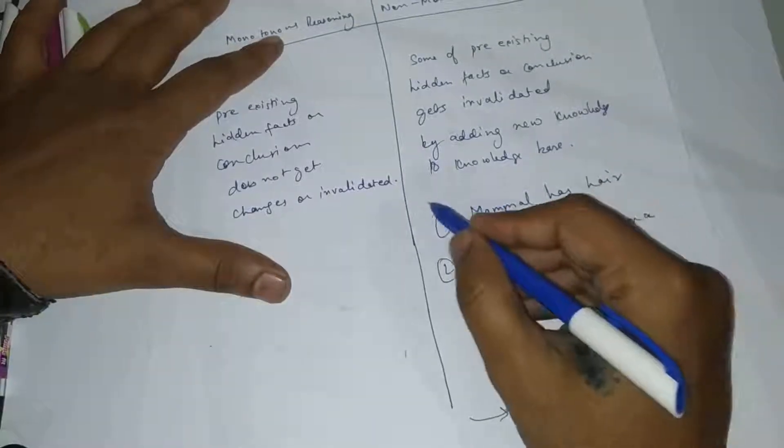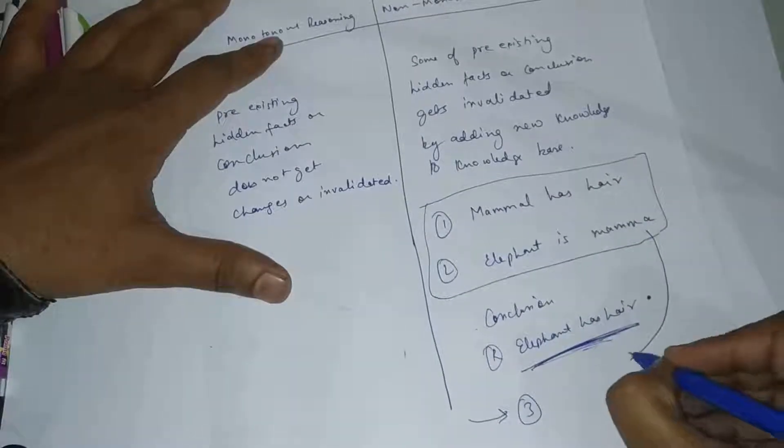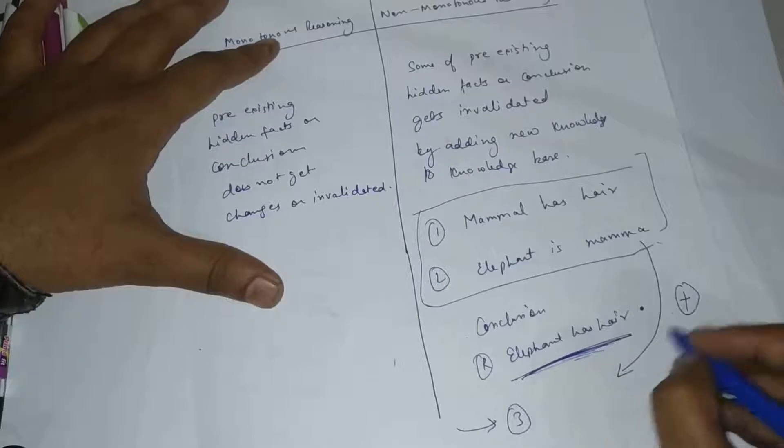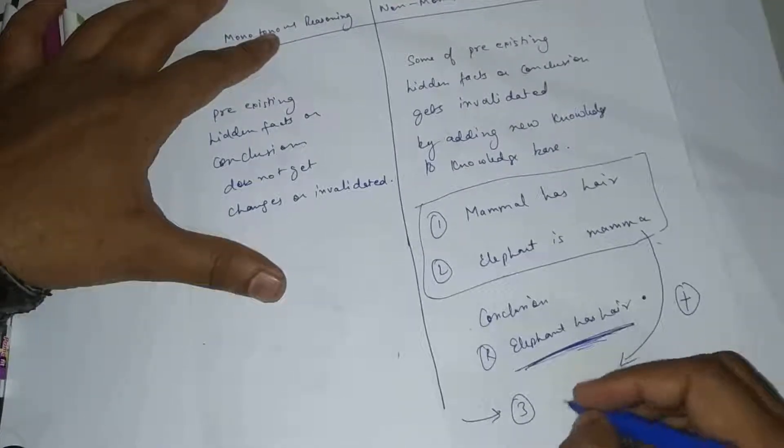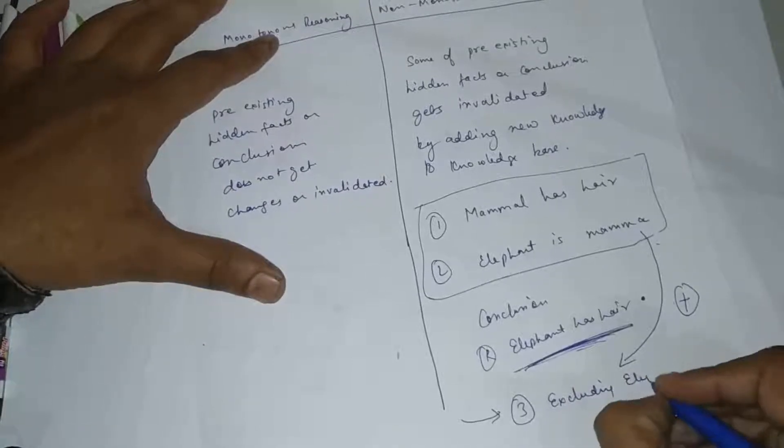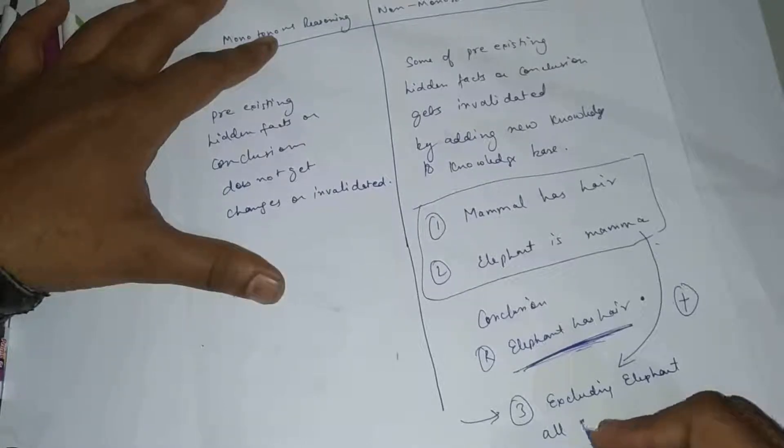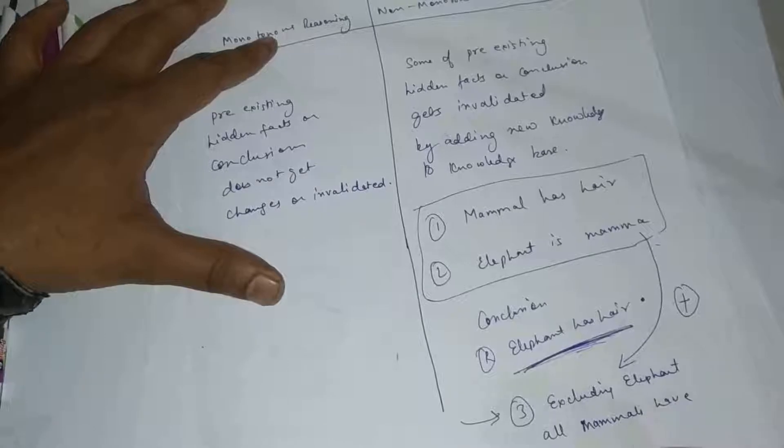I will perform one more addition in this existing knowledge base. When I add a new fact, I will add: excluding elephant, all mammals have hair.